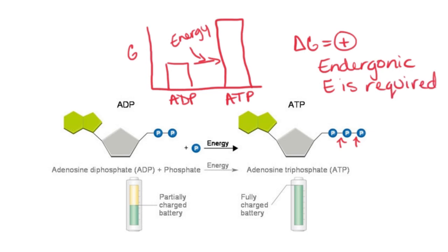As we begin to talk about cellular respiration, one of the big things that we get at the end of cellular respiration is that we are going to get a lot of ATP made. The ways that we can make ATP inside the cell are going to require energy, but we do have a couple of different ways to do this, and we're going to see two different ways as we go through respiration.